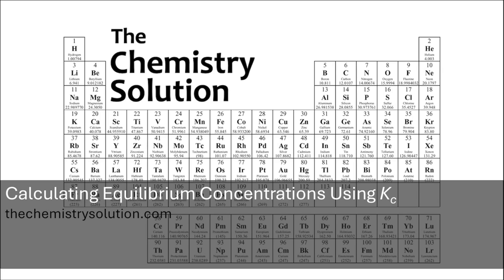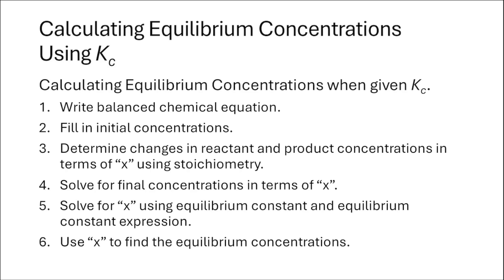Hello and welcome to The Chemistry Solution. This tutorial is on calculating equilibrium concentrations given initial concentrations of reactants and the value of the equilibrium constant Kc. Previous tutorials have covered how to calculate the equilibrium constant if you know the concentrations of your reactants and products at equilibrium. What we're going to do in this tutorial is work backwards and calculate our equilibrium concentrations when given the value of the equilibrium constant.